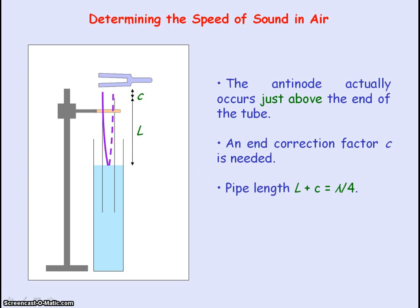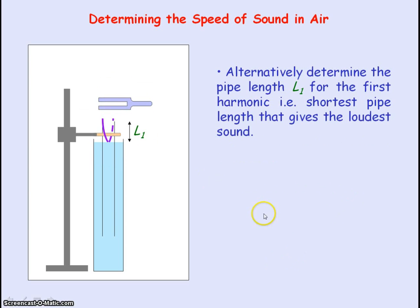As we do not know the value of the end correction factor, an alternative method would be to first measure the pipe length for the first harmonic, and that pipe length will be L1.